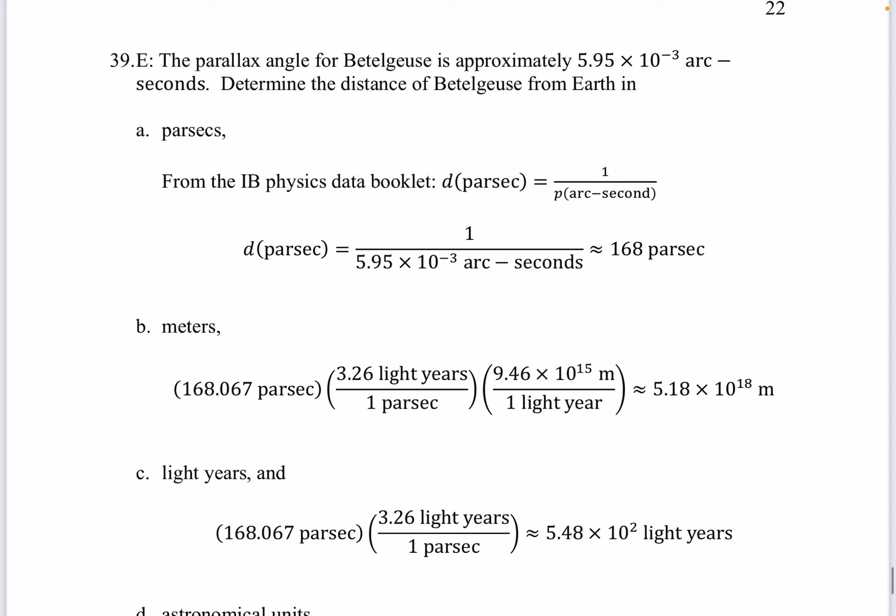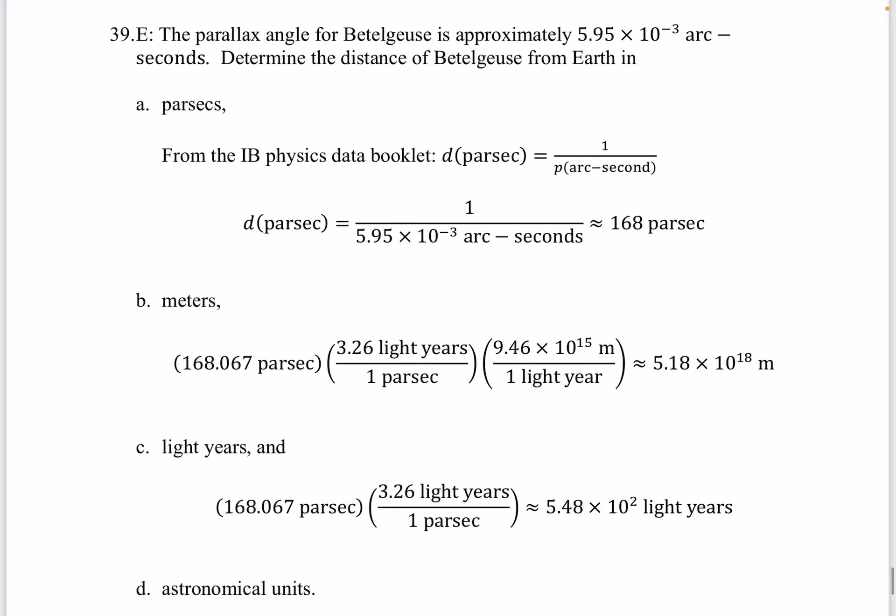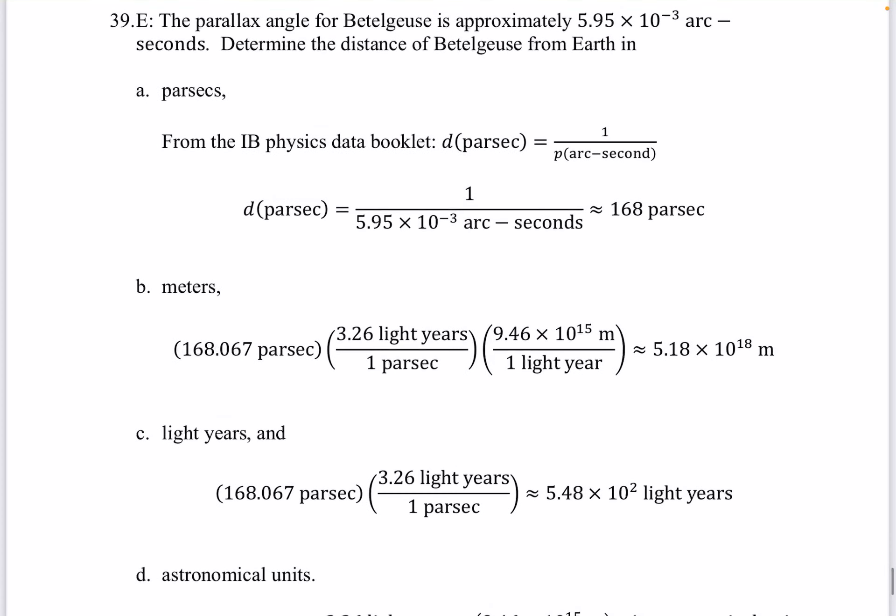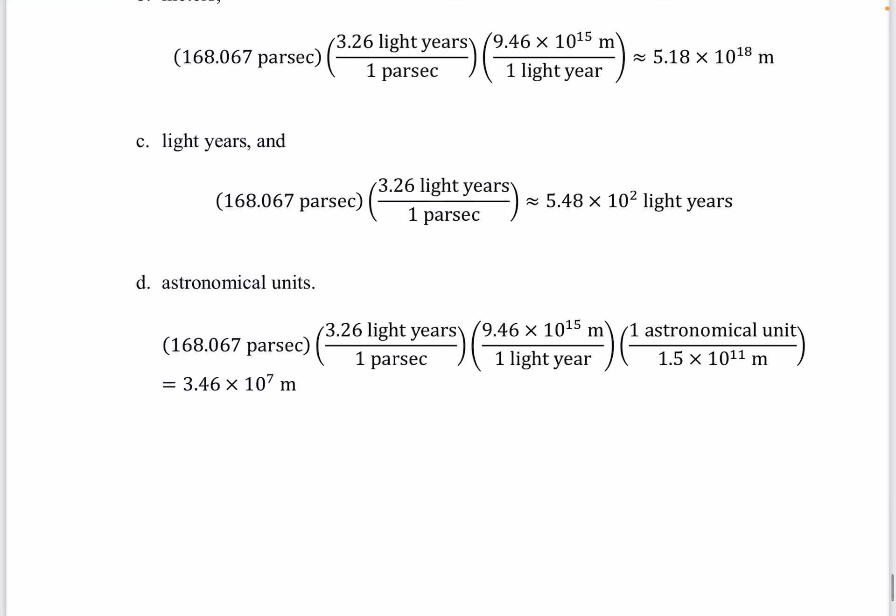Question 39. The parallax angle for Betelgeuse is approximately 5.95 times 10 to the minus 3 arc seconds. Determine the distance of Betelgeuse from Earth in parsecs, meters, light years, and astronomical units. So take a look at parts A, B, and C. And take a look at part D.